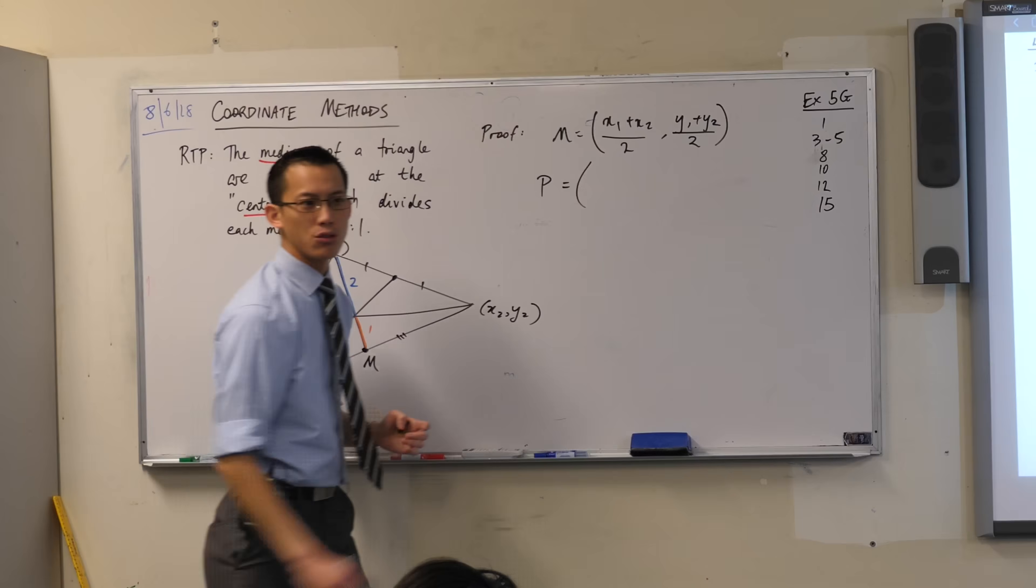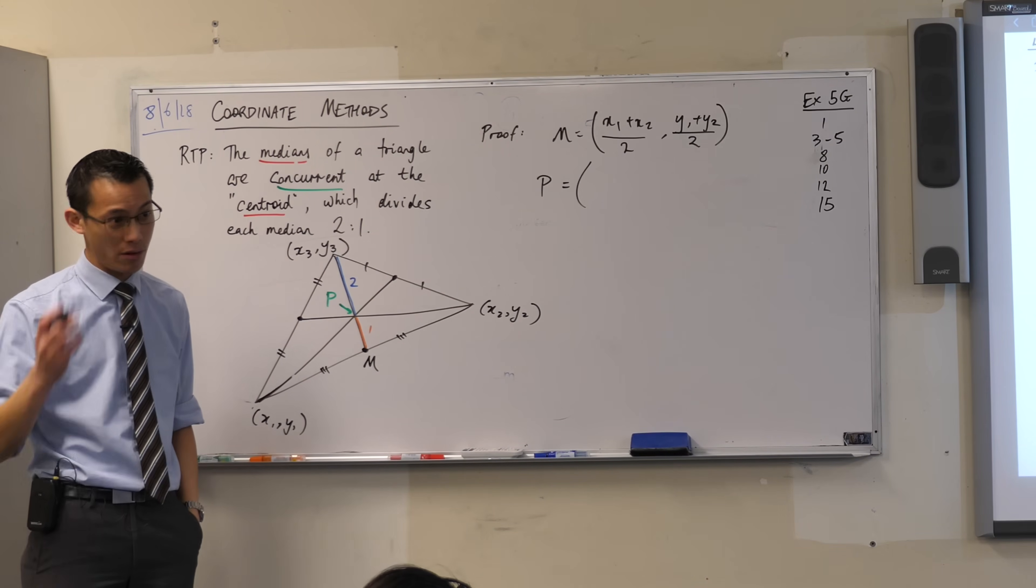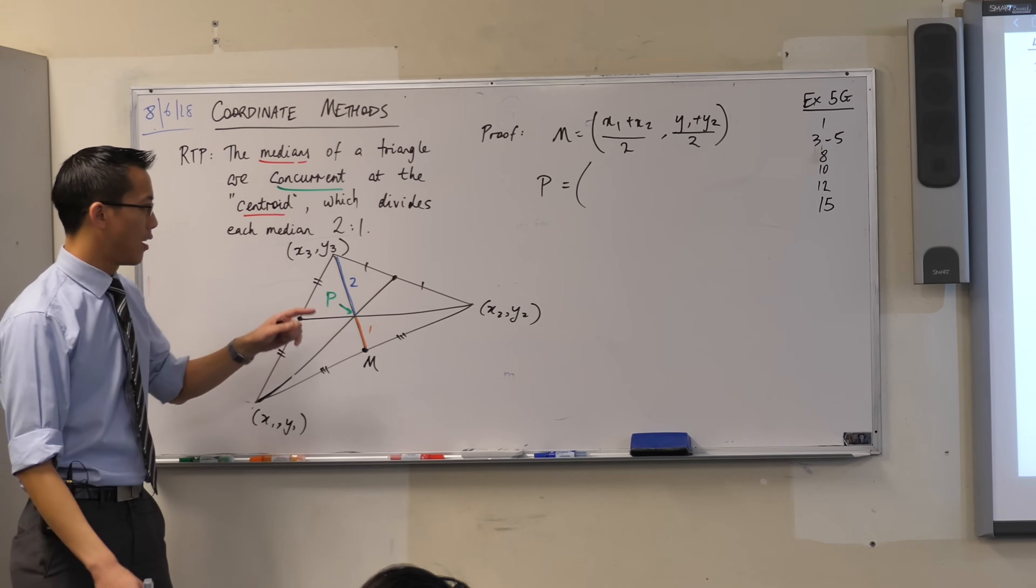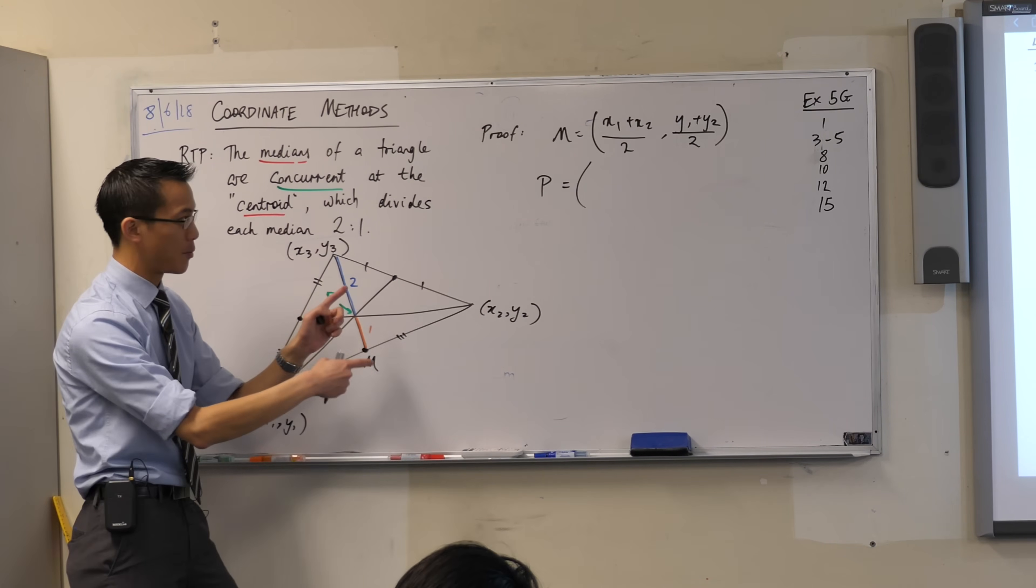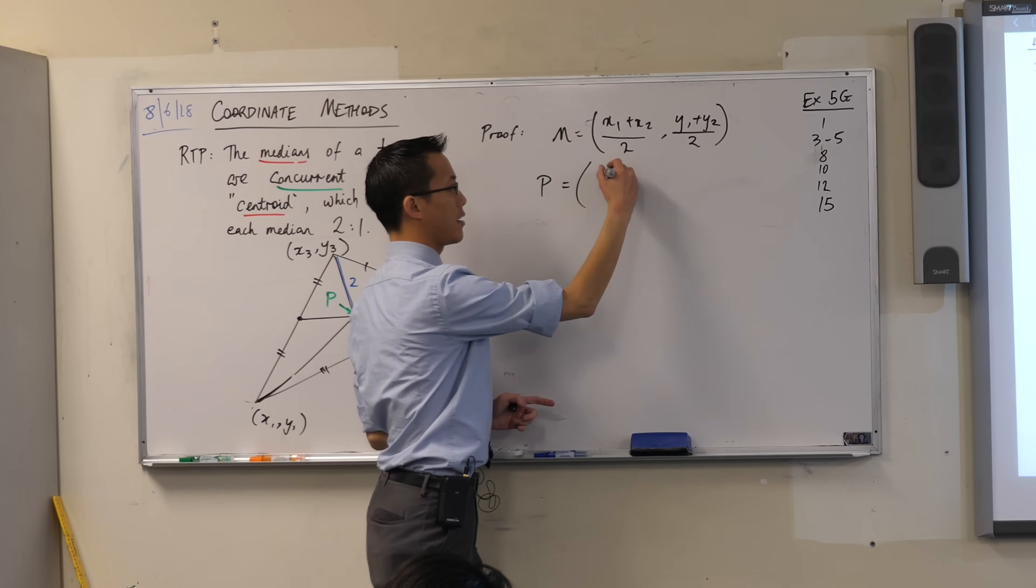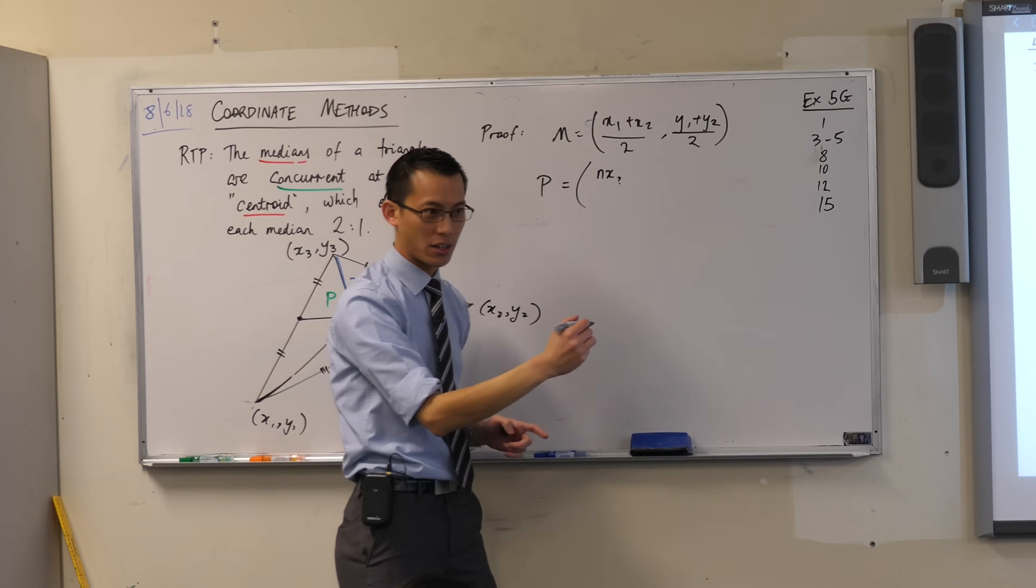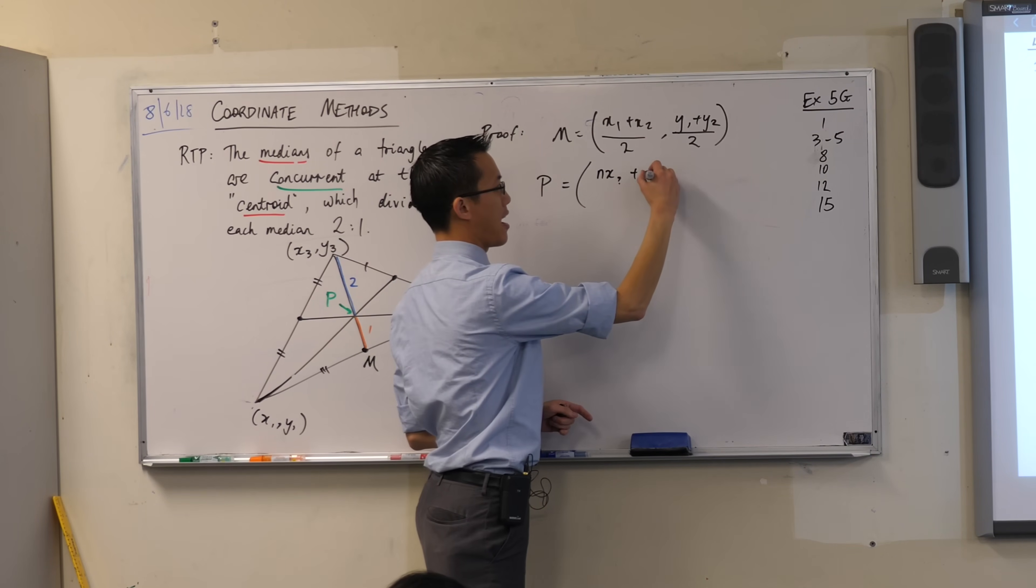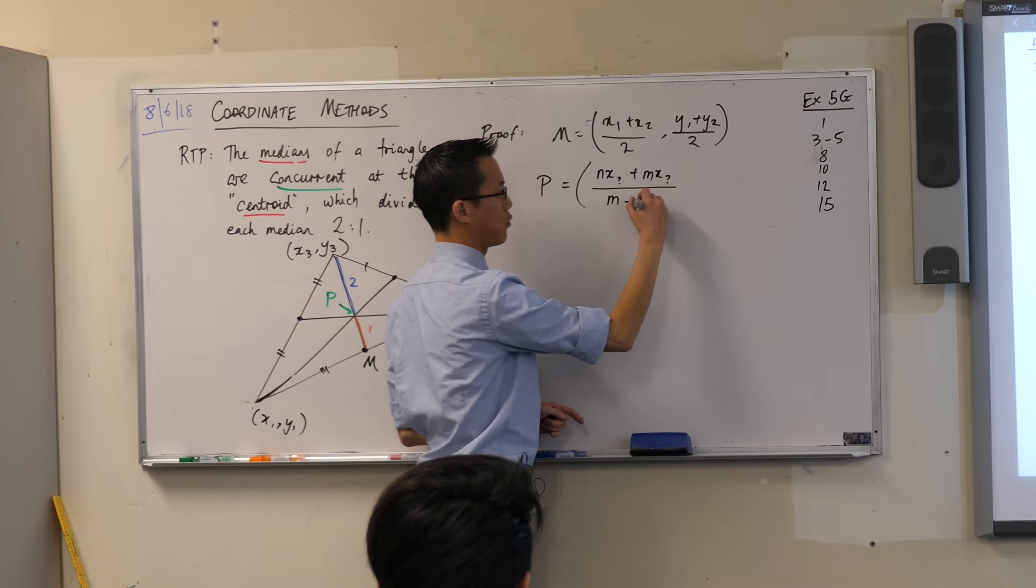So you've got your, I mean, you do have this on the reference sheet, but you guys are x1. I'd like you to be able to get to that point where you actually remember this result. Depending on which way you use it, the one that I remember being given was this. You've got nx whatever, I'm going to put something else there in a second, plus mx, the other whatever, on m plus n.